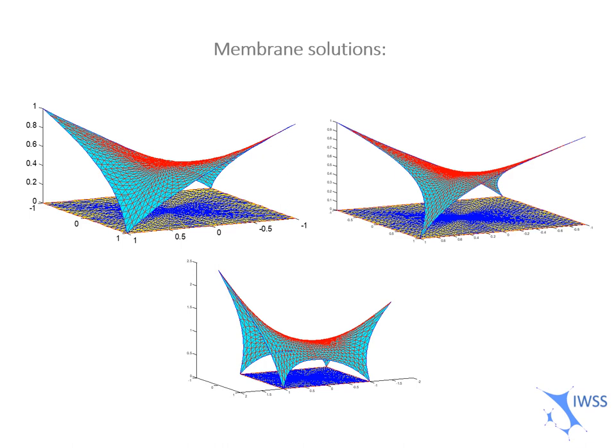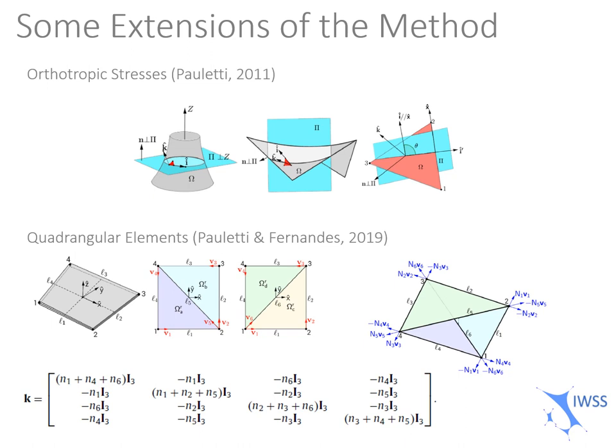Here are some extensions of the method. The first one is the definition of the natural forces regarding orthotropic stresses using director planes. Another one developed by Fernandes and Pauletti is the development of a quadrangular element made with the partition of four sub-triangular elements, each one with half the thickness of the original element. It was shown with benchmarks with ANSYS that this approach is a good approximation and converges to the exact solution.